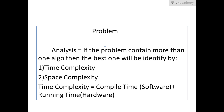Right now we will talk about time complexity, which is nothing but compile time plus running time. Compile time is the time taken by the compiler or software to compile the problem, and run time is the time taken by the CPU, RAM, etc., which are the hardware.